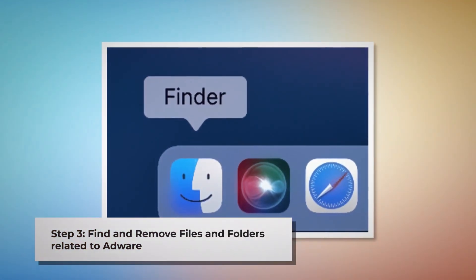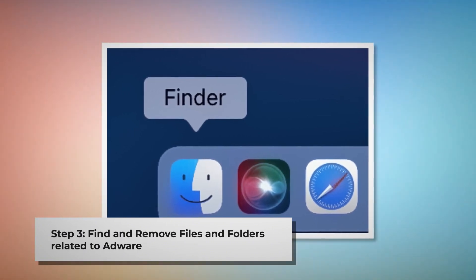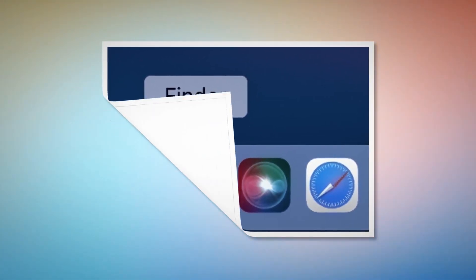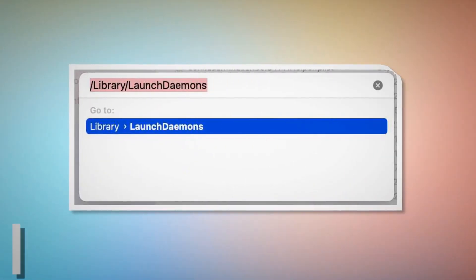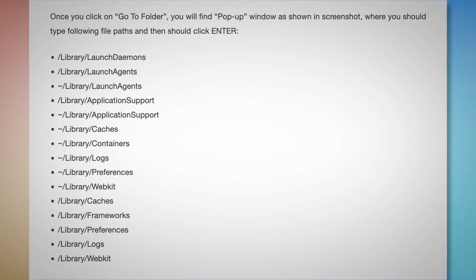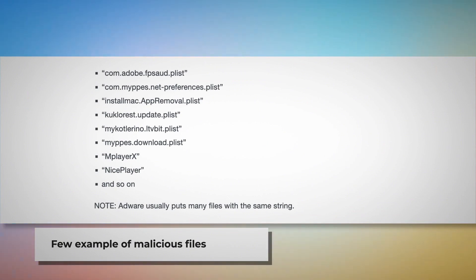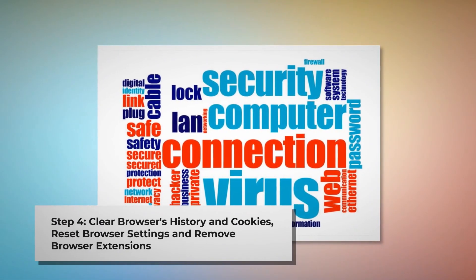Step three: find and remove files and folders related to adware. First, make sure you are in the Finder folder. Once in Finder, click on Go at the top menu bar, and then Go to Folder from the dropdown menu. In the pop-up window that appears, type the following file paths and press Enter: /Library/LaunchDaemons, /Library/LaunchAgents, /Library/Application Support, and so on, as shown in the screenshots. Look for suspicious or malicious files and move them to trash. Note that adware usually puts many files with the same string.